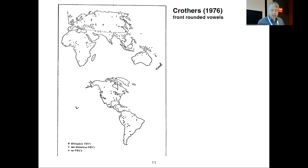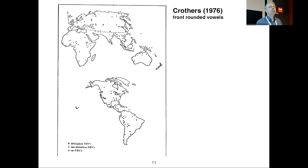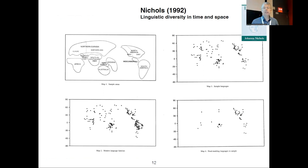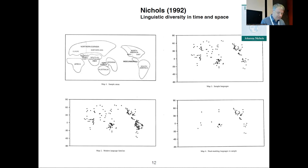In 1976, Grotters published a little article on the distribution of front rounded vowels. The map was very primitive, but that paper really inspired me because he showed that front rounded vowels have a really surprising areal distribution. Then Nichols in 1992, in a really important book, had maps like this — without any coastlines and so on. So everything was very primitive at the time.